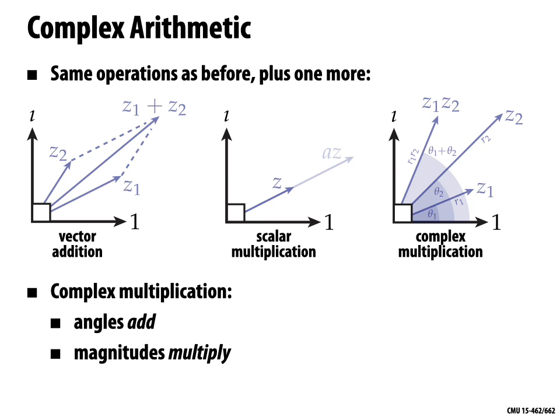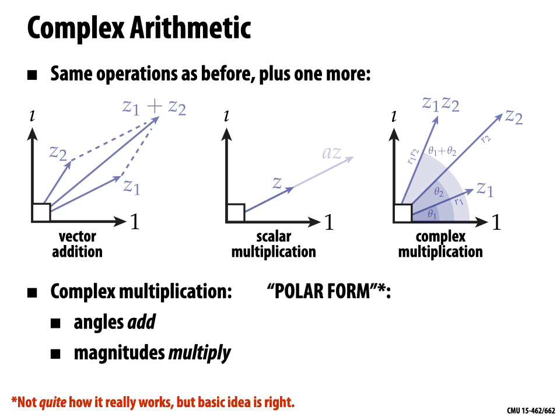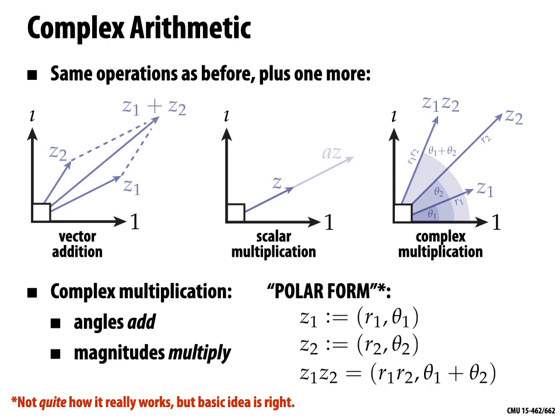One thing to be careful about is that these angles wrap around — I'm not keeping track of an angle that can take any value in the reals; I'm just keeping track of an angle between 0 and 2π. Let's be a little more precise. In rectangular or Cartesian coordinates with basis (1, i), we can express the first vector z as a + bi and the second vector as c + di for real numbers a, b, c, d.